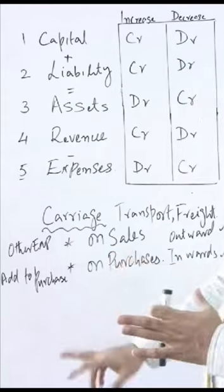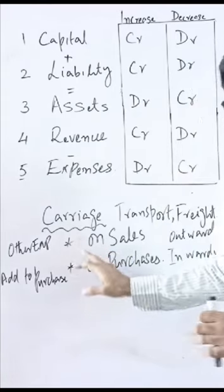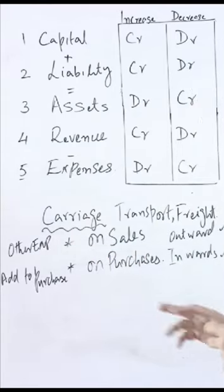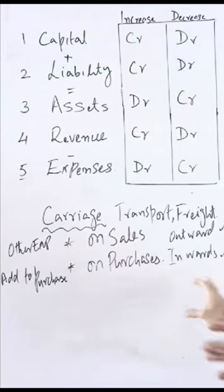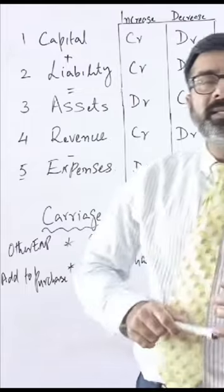Carriage can be either on the sales, so it is written as carriage outwards, or carriage can be on the purchases, which is also known as carriage inward.